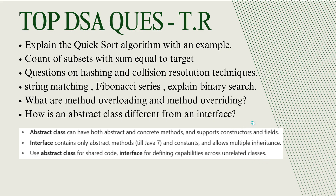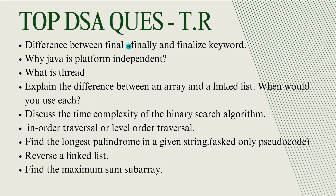Have a complete idea on sorting algorithms and string-related problems, hashing, collision, string matching, Fibonacci, palindrome, and basic questions. Know method overriding and overloading — basic differences. What is the difference between final, finally, and finalize keywords? Many students are facing this question. And why is Java platform independent? What is a thread?